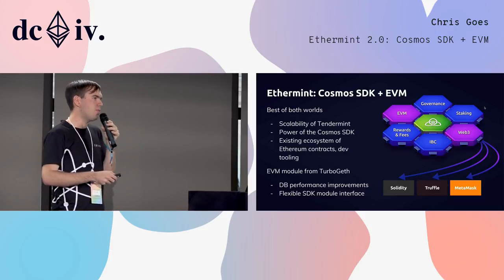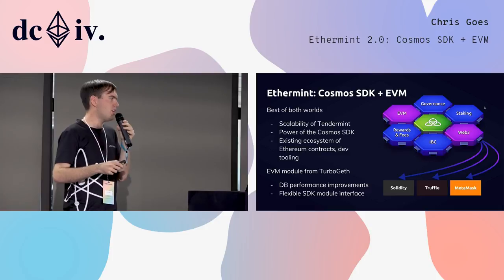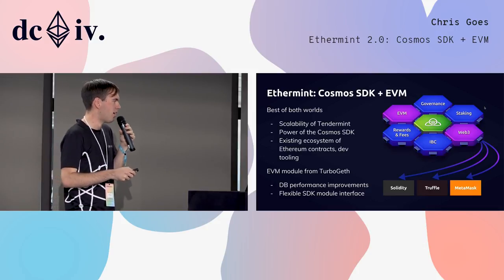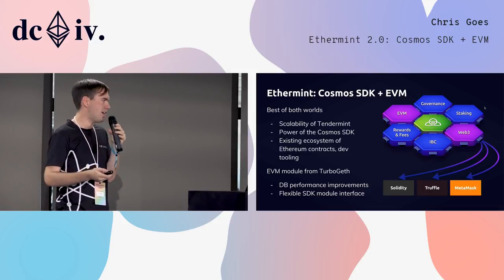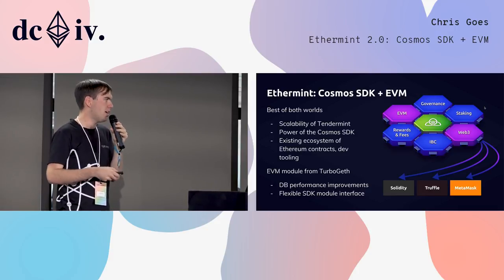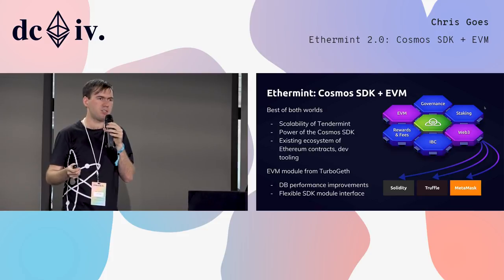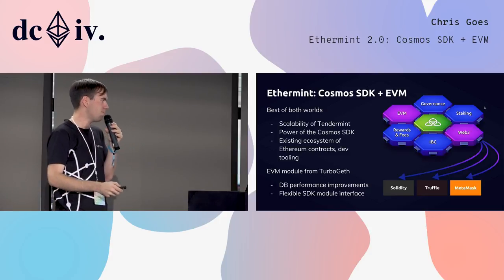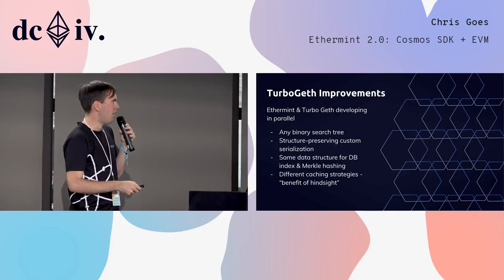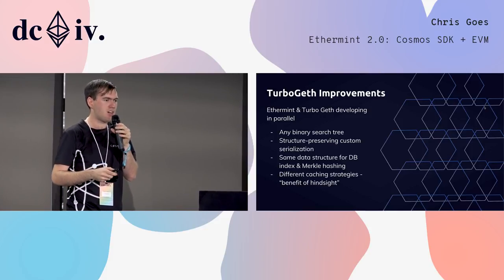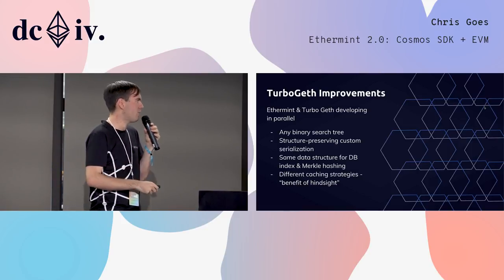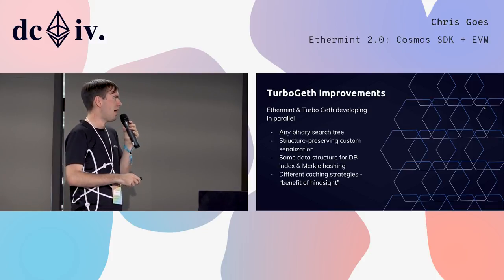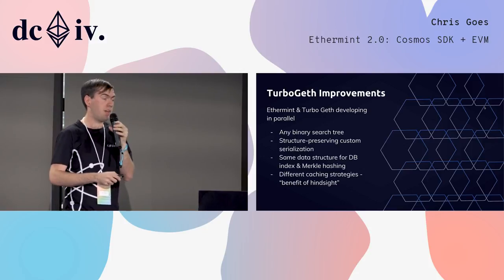We've even done more than that. We've not just ported, as in Ethermint 1.0, the EVM module from Geth. We've ported the EVM module from TurboGeth, which Alexei is working on. That features a lot of improvements over the base EVM — it's faster, we've changed up how the database works, and of course it connects through the SDK module interface so you can have pre-compiles in the EVM which really call into other Cosmos SDK modules or vice versa. TurboGeth — I will encourage you to stop by Alexei's talk, which is tomorrow afternoon, same time — is being developed in parallel as an Ethereum client along with the Cosmos SDK module, and has numerous improvements over the current available EVM implementations.